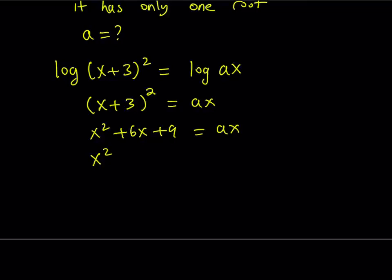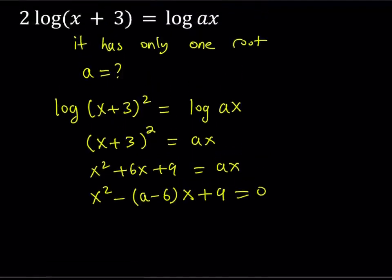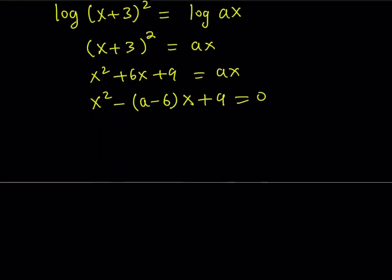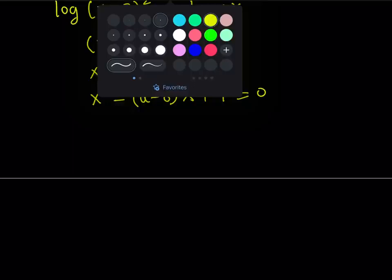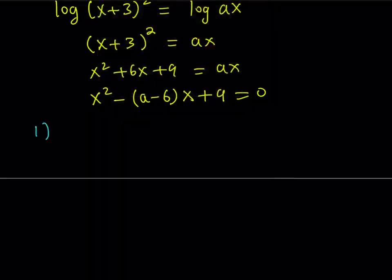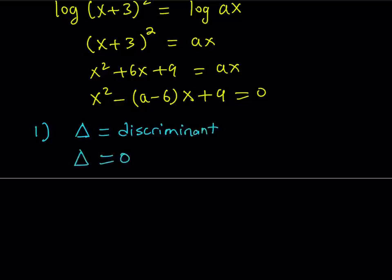Rearranging, we get x² + (6−a)x + 9 = 0. I'll write the b-coefficient with a negative sign in front, convenient for the quadratic formula. The key question is whether this is truly quadratic. We need exactly one root, so let's consider the cases. The first case: we want the discriminant delta to equal zero, meaning the two solutions are equal.